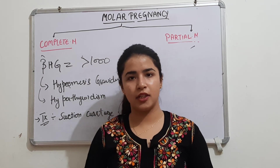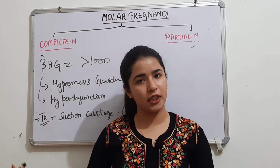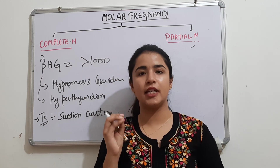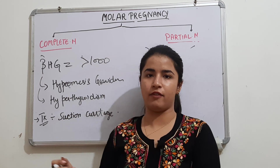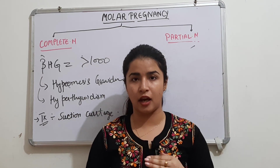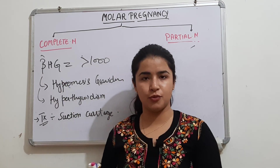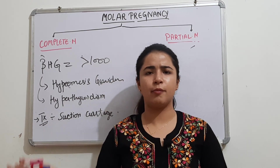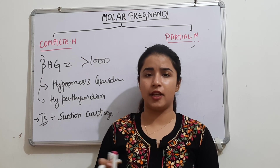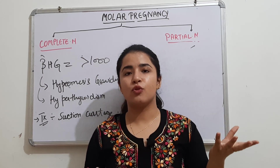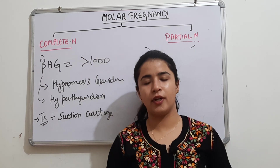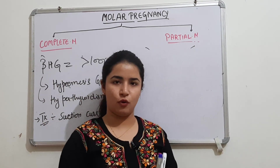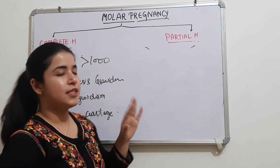After treatment, follow up the patient with serial beta HCG levels. Call her for follow-up every month for 3 months and check that beta HCG is returning to normal. Once it normalizes, continue follow-up for another 6 months to monitor for any development of choriocarcinoma.